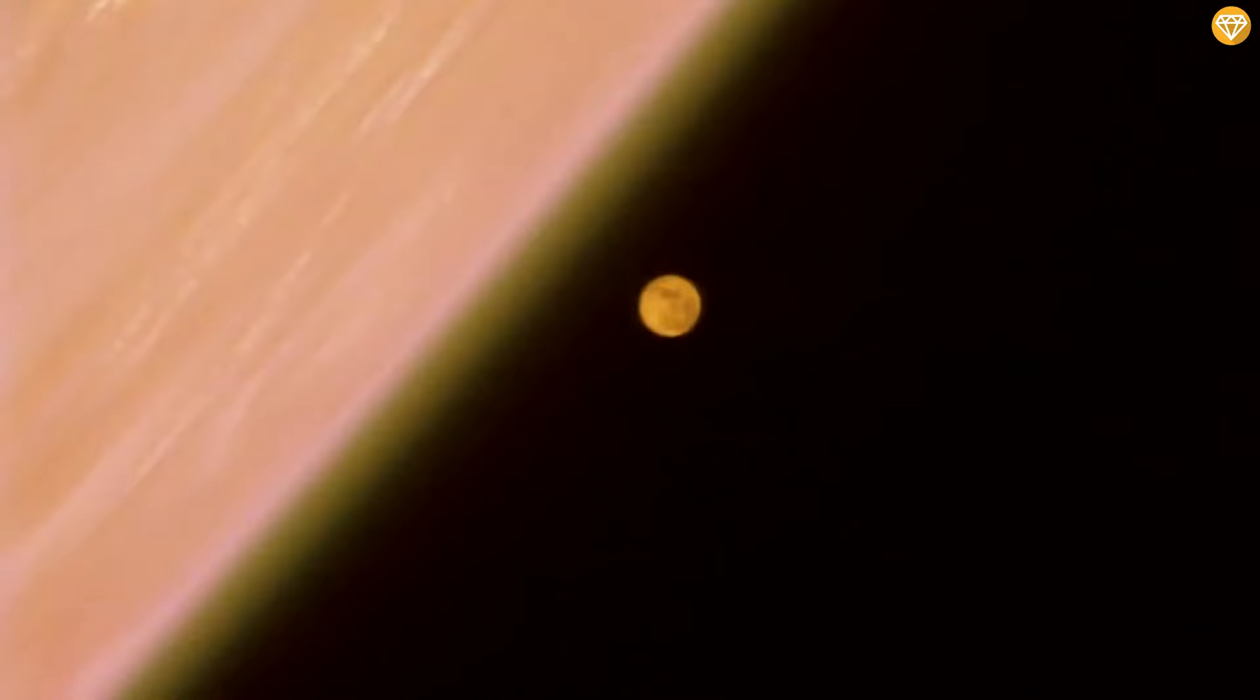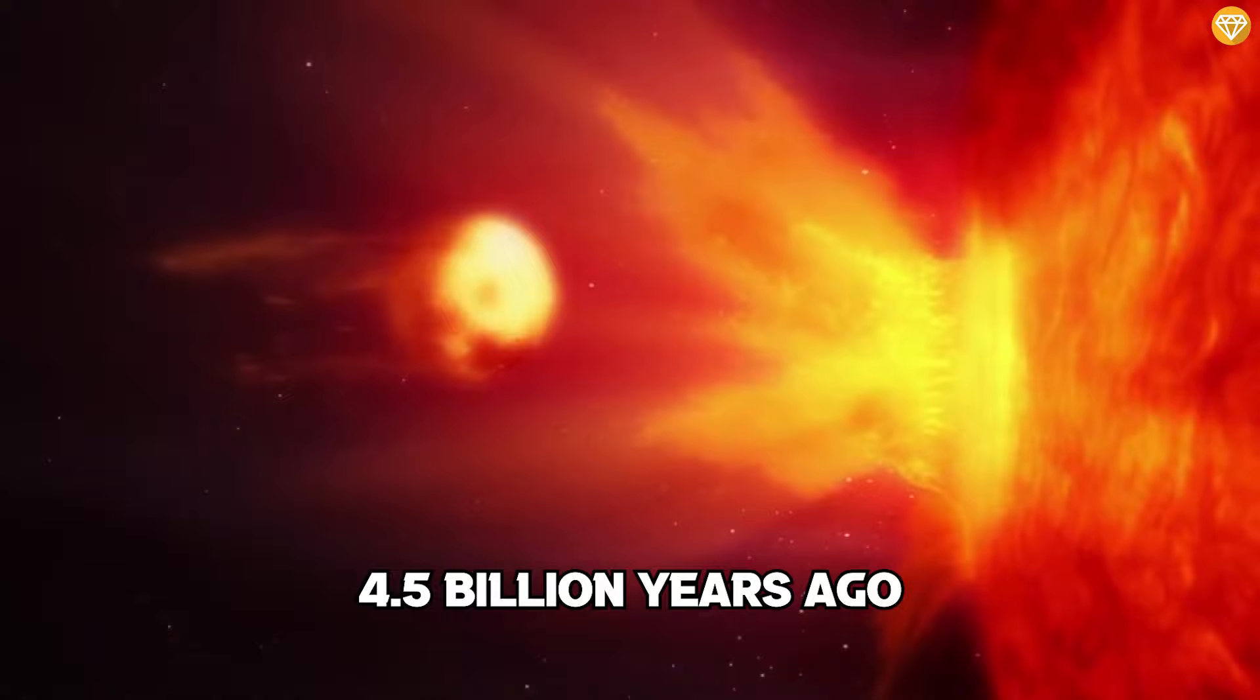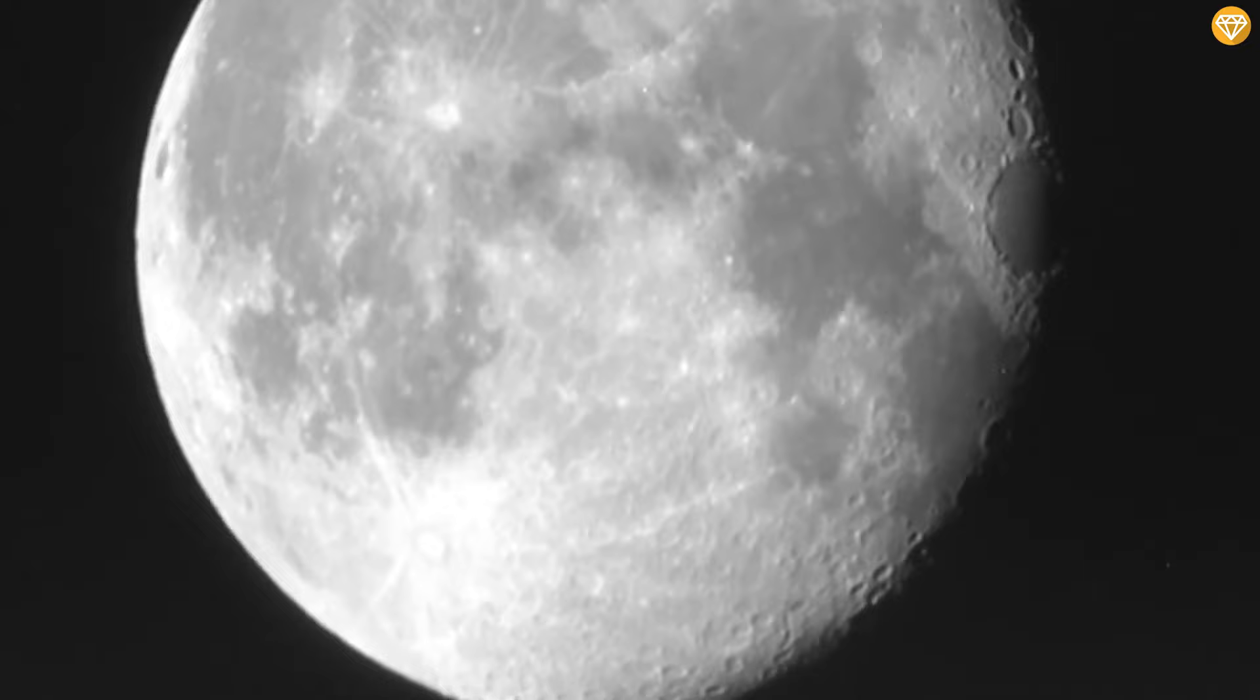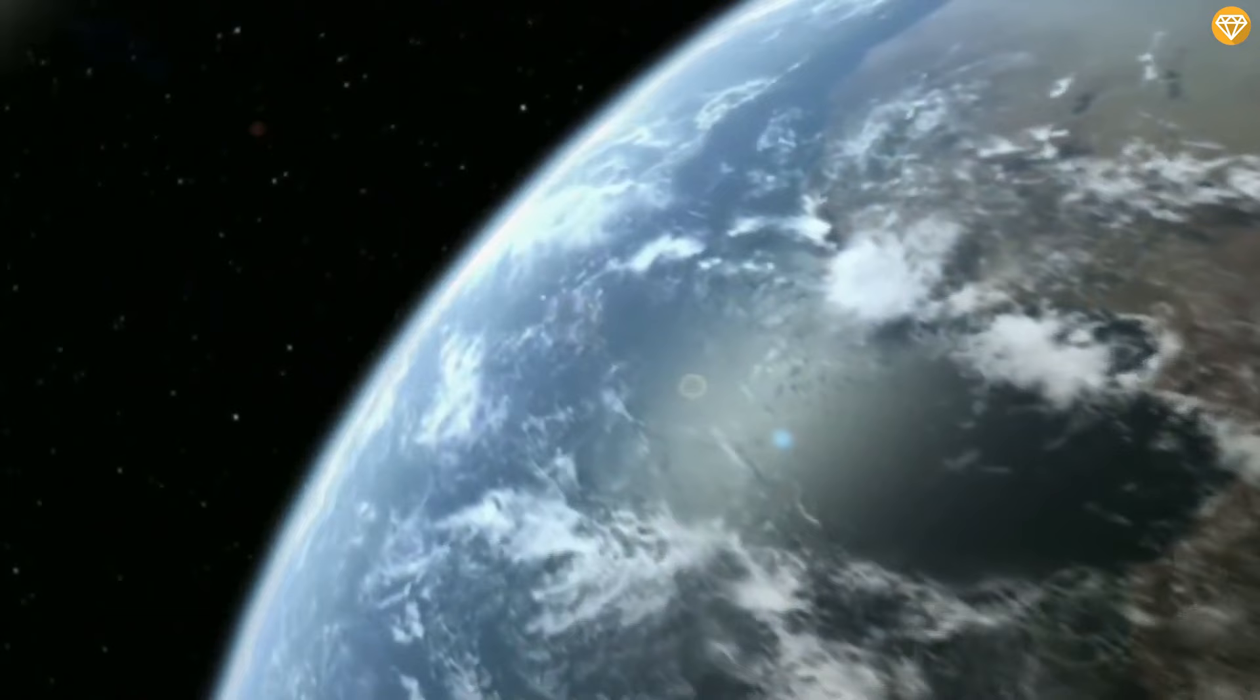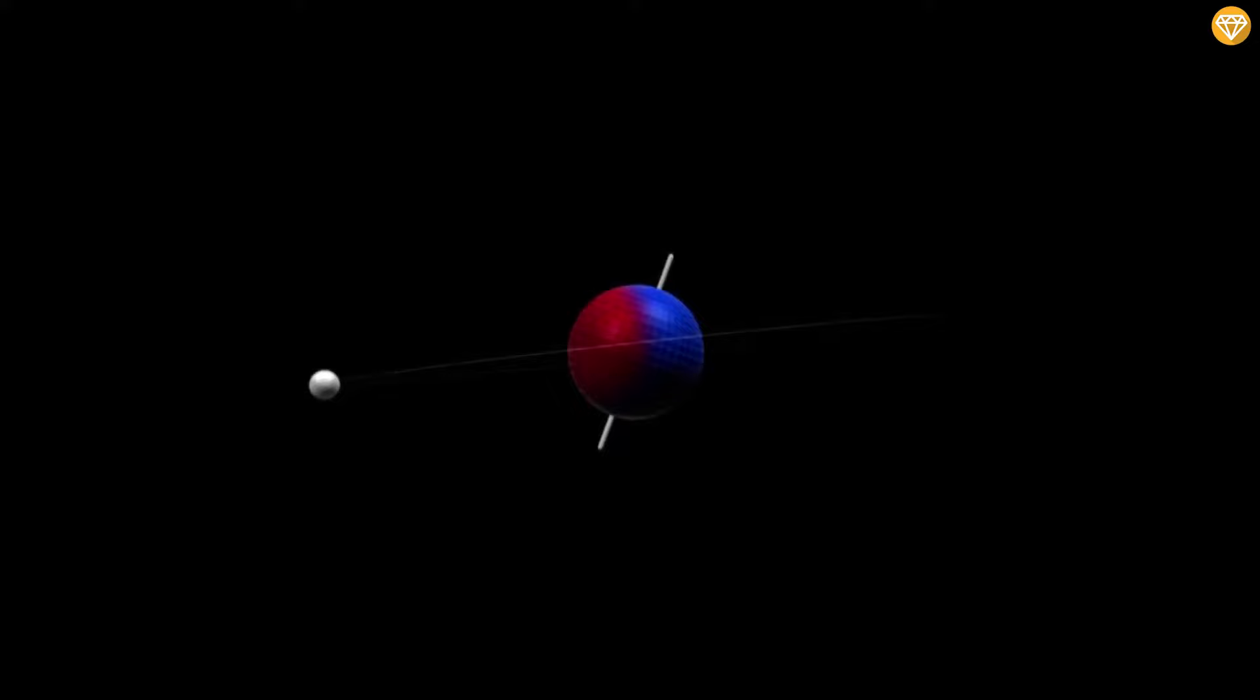The Earth's tilt is believed to have been caused by a collision during its formation 4.5 billion years ago, with the moon's gravitational influence stabilizing it over time. If the moon did not exist, some experts speculate that the Earth's tilt could increase significantly. Estimates range from an additional 20 degrees to as much as 85 degrees.